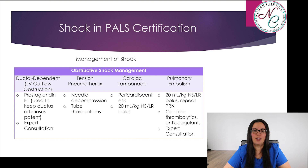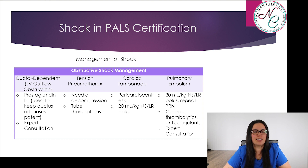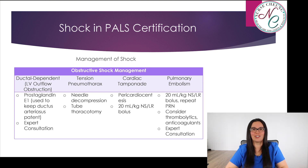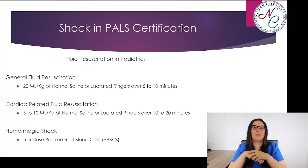Cardiac tamponade requires a pericardiocentesis, and we also want to start giving fluids — 20 mLs per kilogram of normal saline or lactated ringer boluses. For pulmonary embolism, same with our fluid — 20 mLs per kilogram of normal saline or lactated ringer bolus repeated as necessary. We may also consider thrombolytics or anticoagulants, and in that case we definitely want to seek expert consultation.